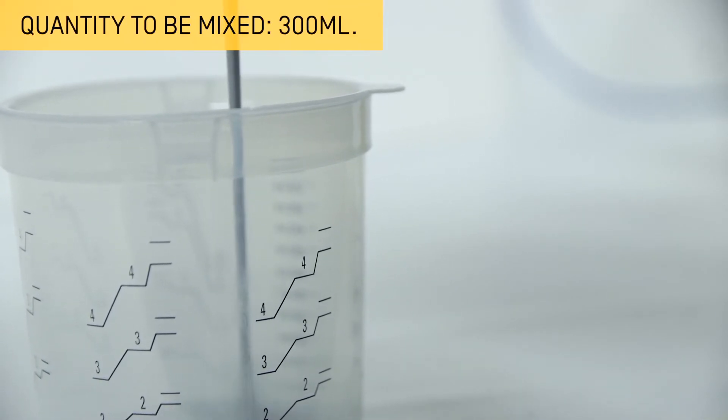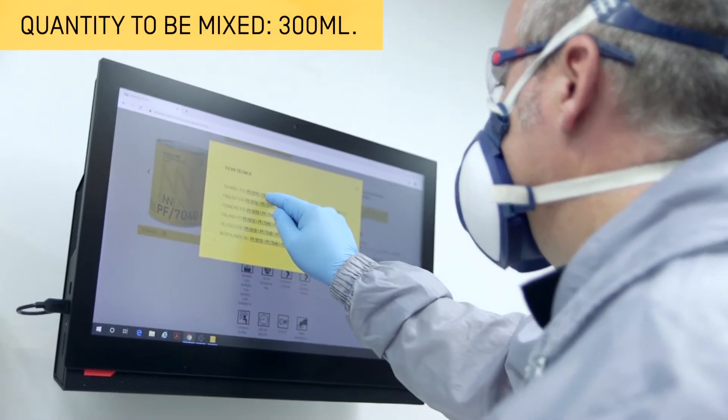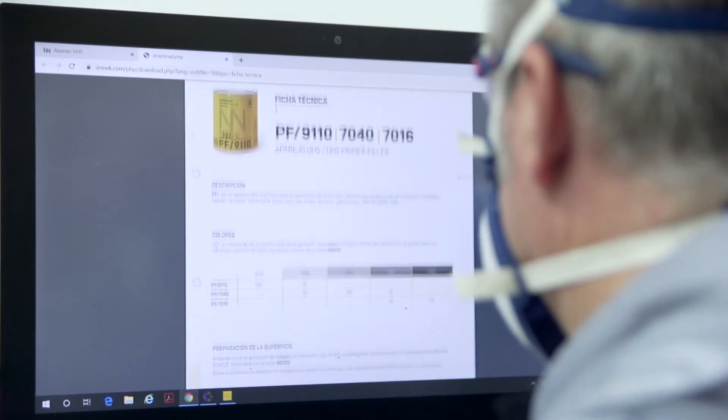Let's see an example of mixing with this method. First, choose the amount of paint to be mixed depending on the repair. In this example, we're going to mix 300 millilitres of primer filler paint.